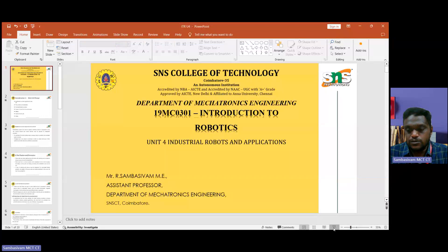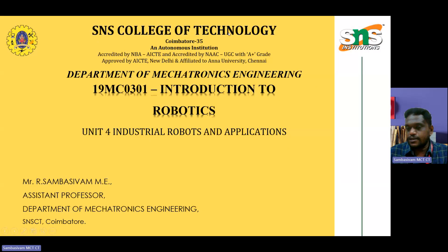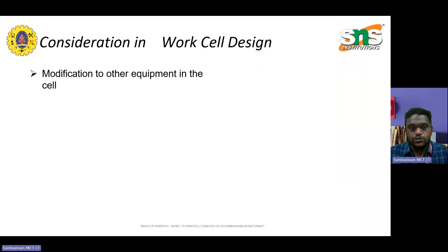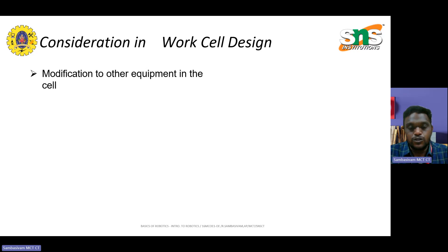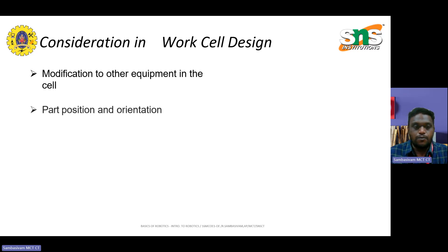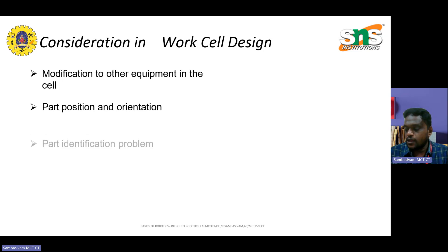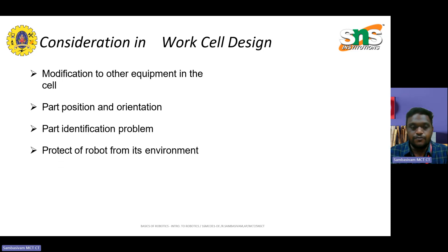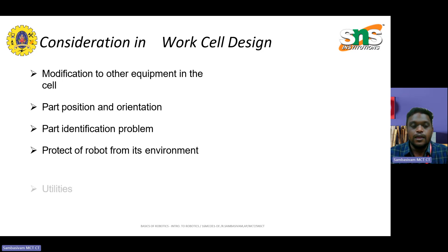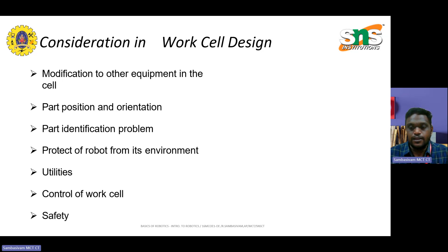The considerations of work cell layouts are important when compared to others. The most important consideration is the modification to other equipment in the cell. The second one is part position and orientation. The third one is part identification problems, followed by protecting the robot from its environment, then utilities, then control of the work cell, and finally the important factor — safety.